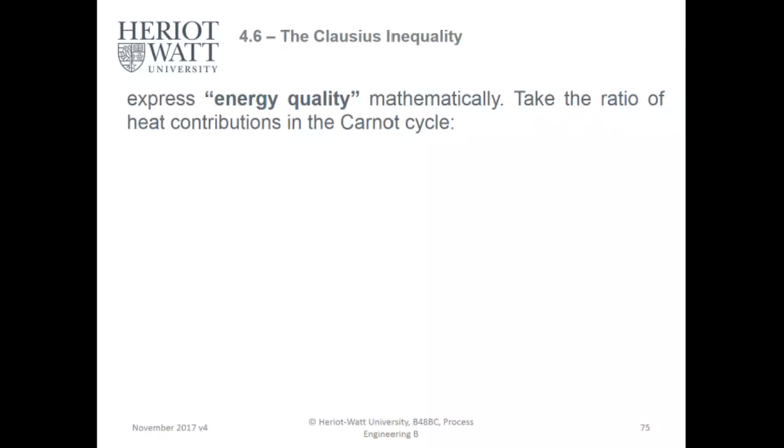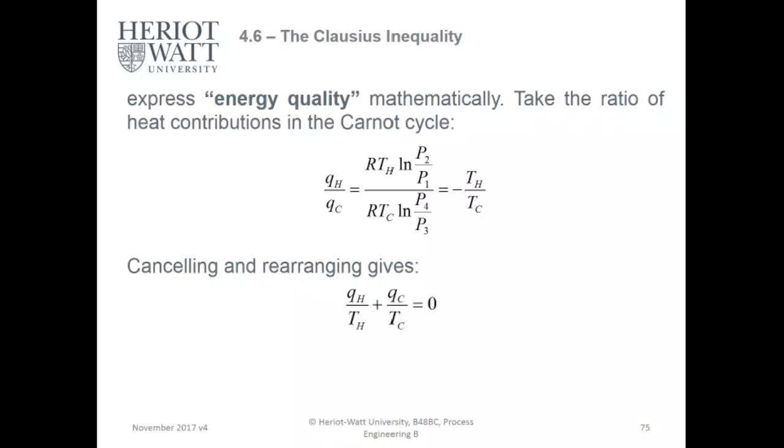This is the final part of the lecture: we're going to talk about Clausius Inequality. Express energy quality mathematically. Take the ratio of heat contributions in the Carnot cycle: QH over QC, the higher quality heat over the lower quality heat, equals R TH log of P2 over P1. When you're doing work through compression, you can convert your network to the work equation equals minus TH over TC.